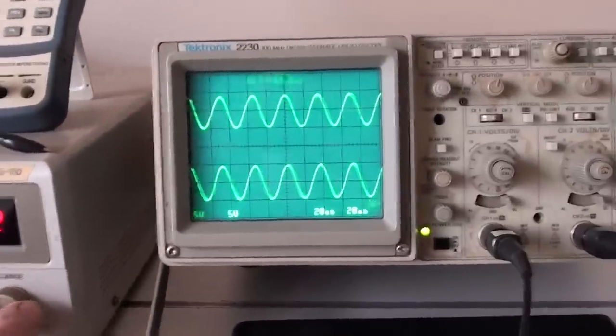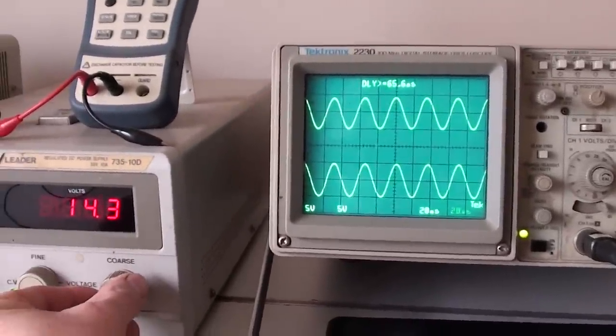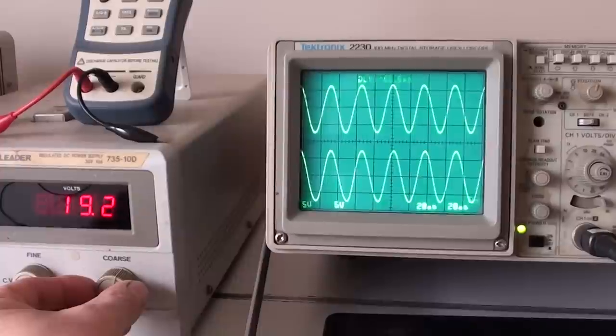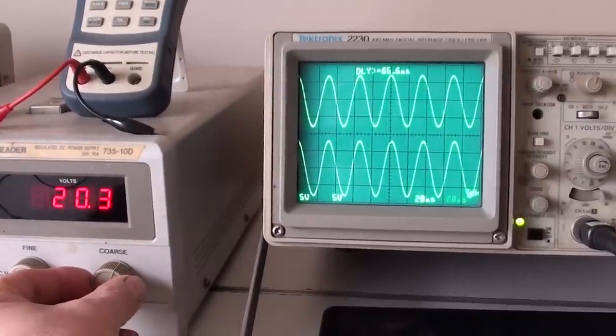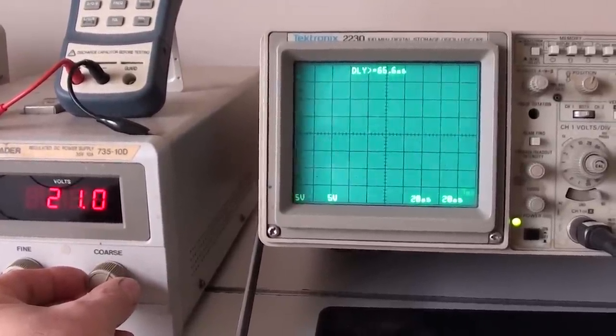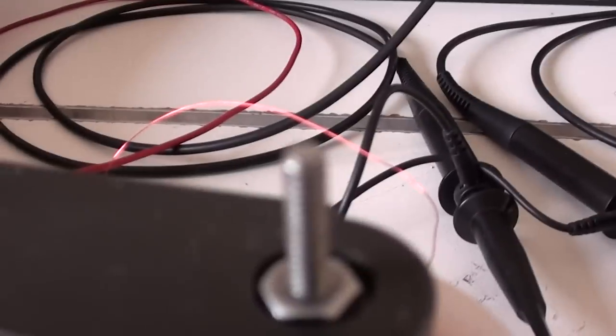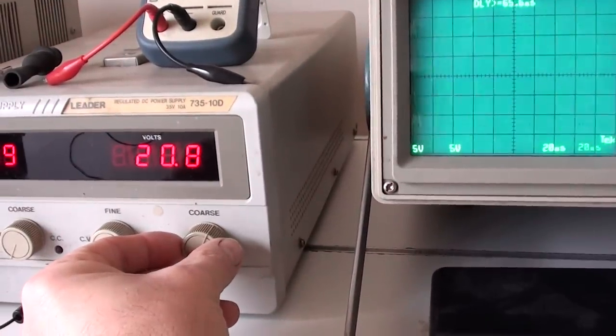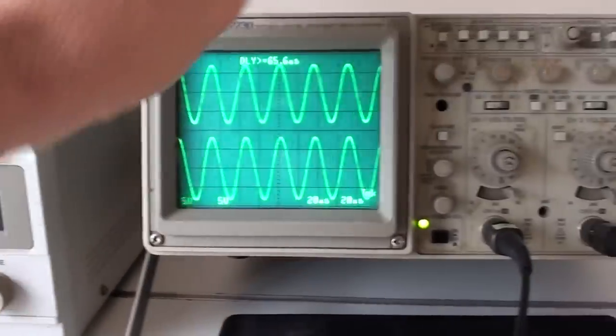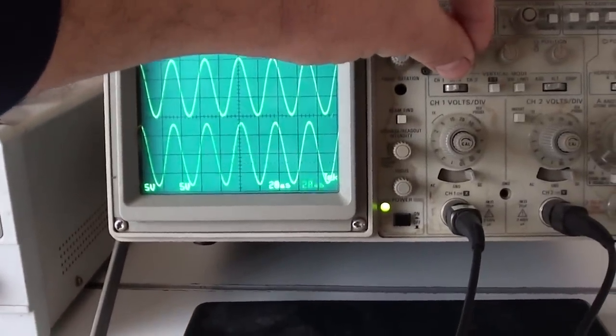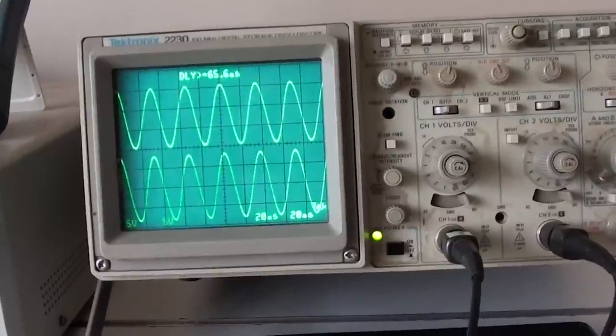Now, watch as we turn up the voltage. I can only go a little over 20 volts before, right there. You can hear that, that's the choke coil shorting out. But anyway, let's bring this down to where we can see it.